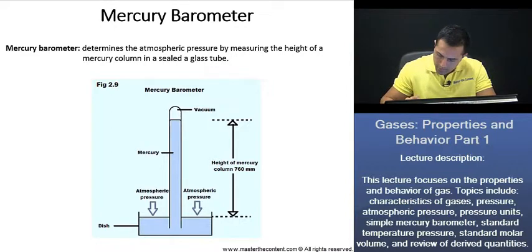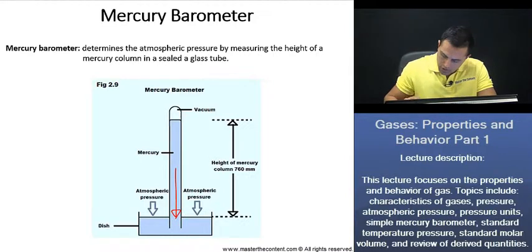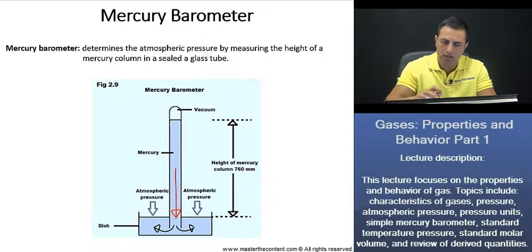Initially, the downward pressure of the mercury inside the glass tube is going to be greater than the atmospheric pressure. Thus, mercury will flow out of the glass tube and into the dish as follows.